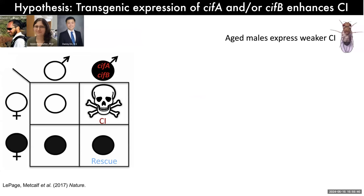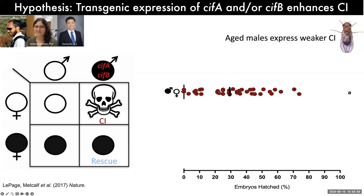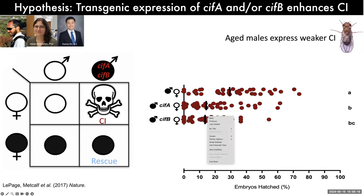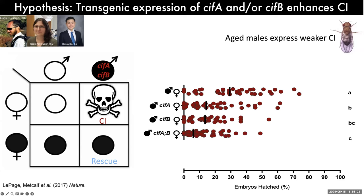We pushed further by expressing CIF-A and CIF-B in an infected male with Wolbachia — males that were aged and thus express weaker CI. When we expressed CIF-A in that same type of wild-type aged male, we could push the CI level to a stronger degree, showing less embryonic hatching. The same was true for CIF-B, and together with CIF-A and CIF-B, we could push it even further. This means the transgenic product of the CIFs works in conjunction with wild-type CIFs to titer the protein and turn on more lethality. That really convinced us that CIF-A and CIF-B were the cytoplasmic incompatibility genes.